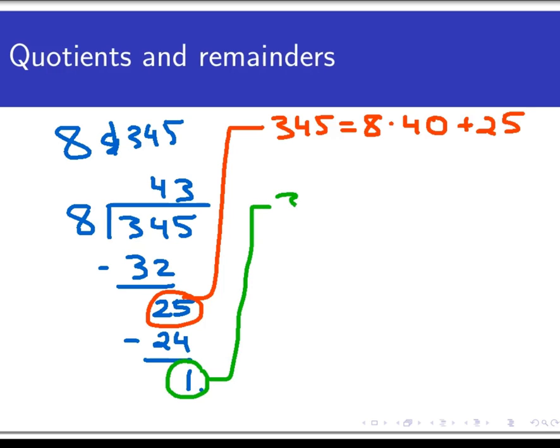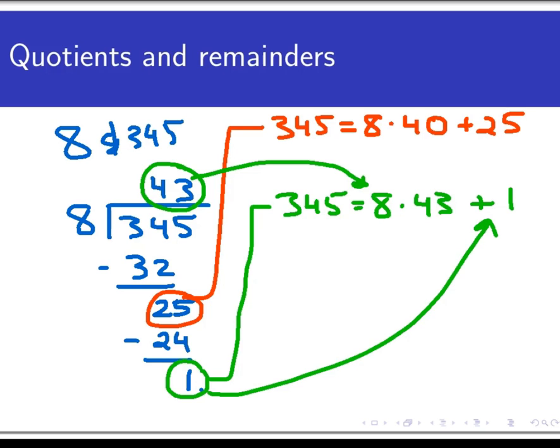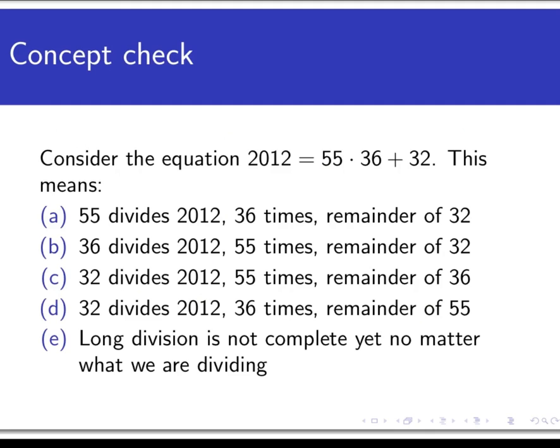And I can write that expression as follows: 345 equals 8 times 43 plus 1. Note the quotient here is being multiplied to the divisor, 8, and the remainder, 1, is being added to the product to get that 345. It's this final addition/multiplication step that's important. Notice what this does is allow me to talk about the result of long division without mentioning any division. I can see the quotient and the remainder at a glance. So let's see how well you understand this with a concept check.